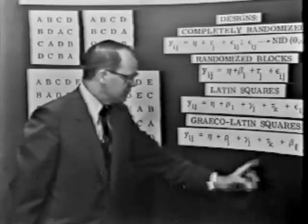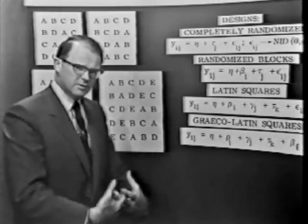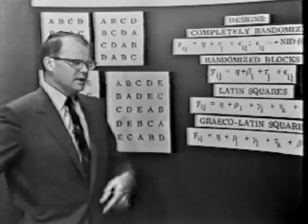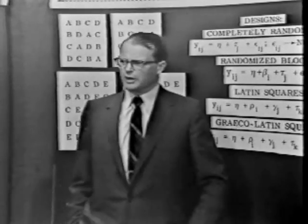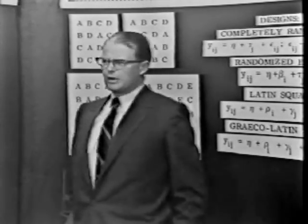So there are three blocking variables and one sort of studied variable, the treatment variables. Let's have a look at a Graeco-Latin square.